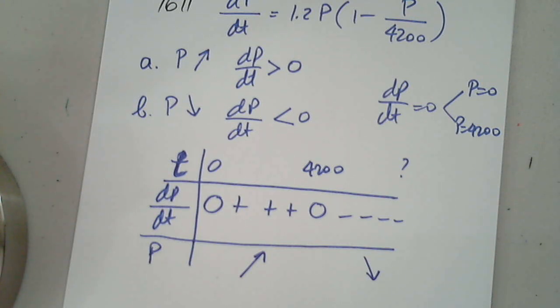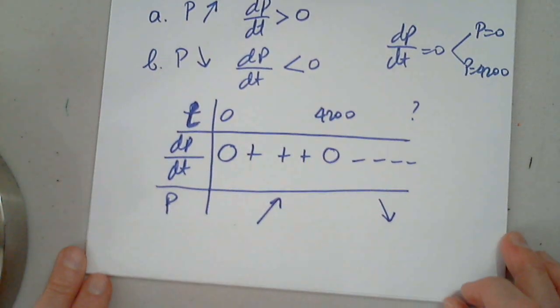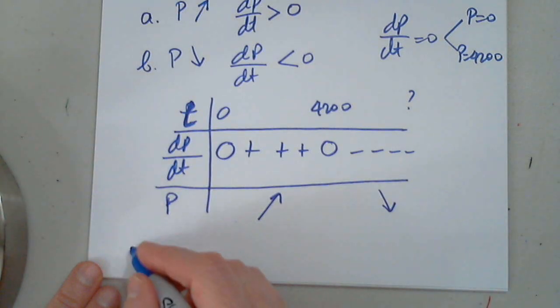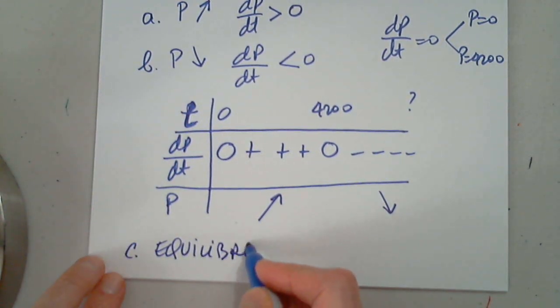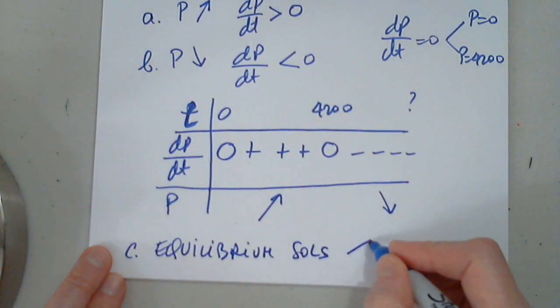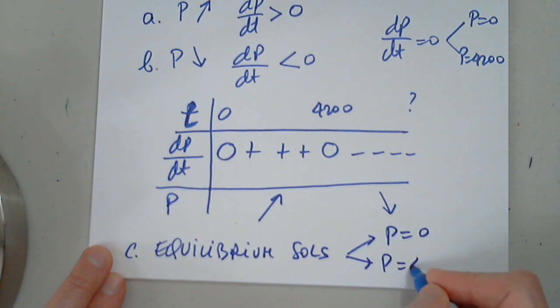The equilibrium solutions, when we're asked about the equilibrium solutions, they are exactly P equals 0 and P equals 4200. Those are the equilibrium solutions. That's all we needed in this section. Thank you.